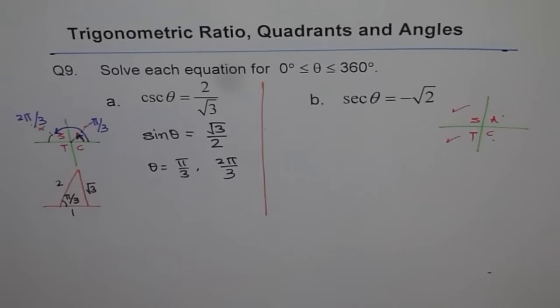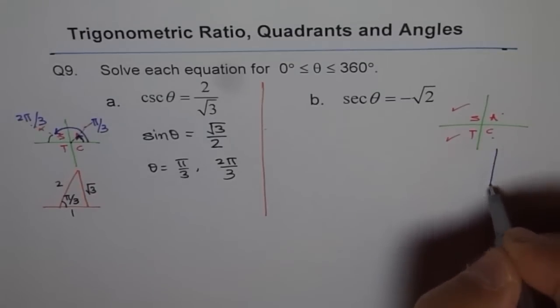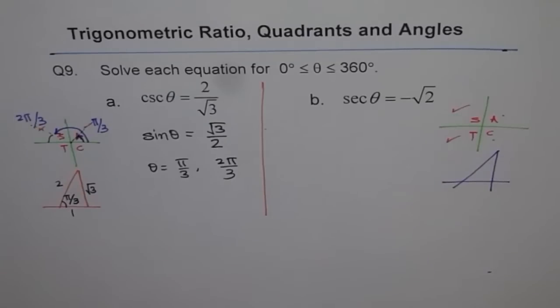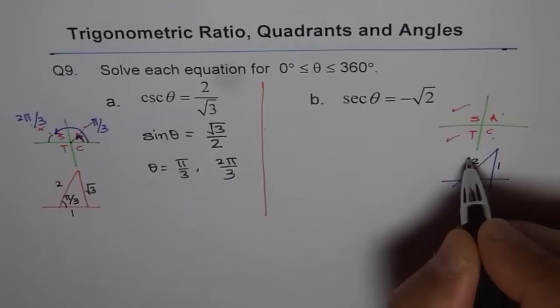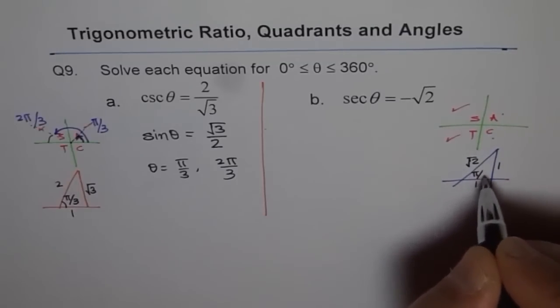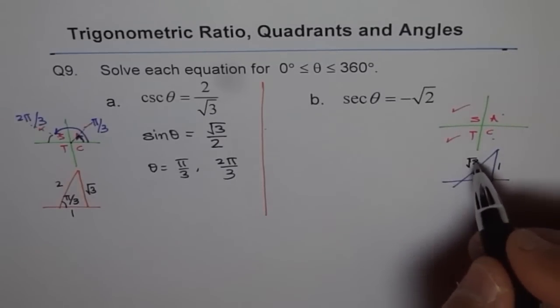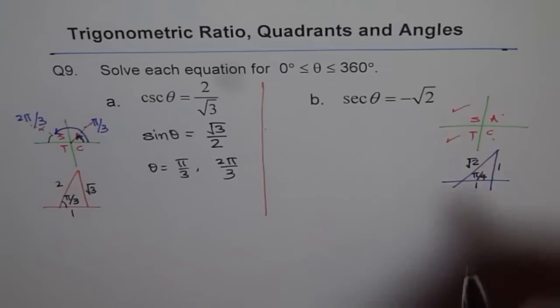Now, for square root of 2, our special triangle is 45 degrees. So here we have 1, 1 and square root of 2. So pi by 4 secant theta will be square root 2 over 1.